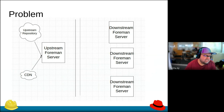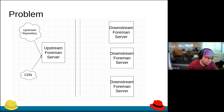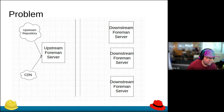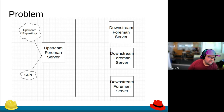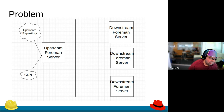Now comes the interesting part — here's the problem we are trying to solve. I have a Foreman server here, and I have a disconnected line — this is supposed to be an air-gap network. There's nothing between this and this. The idea is we are trying to export content from the upstream Foreman server and somehow import that into a downstream server without a network in the middle.